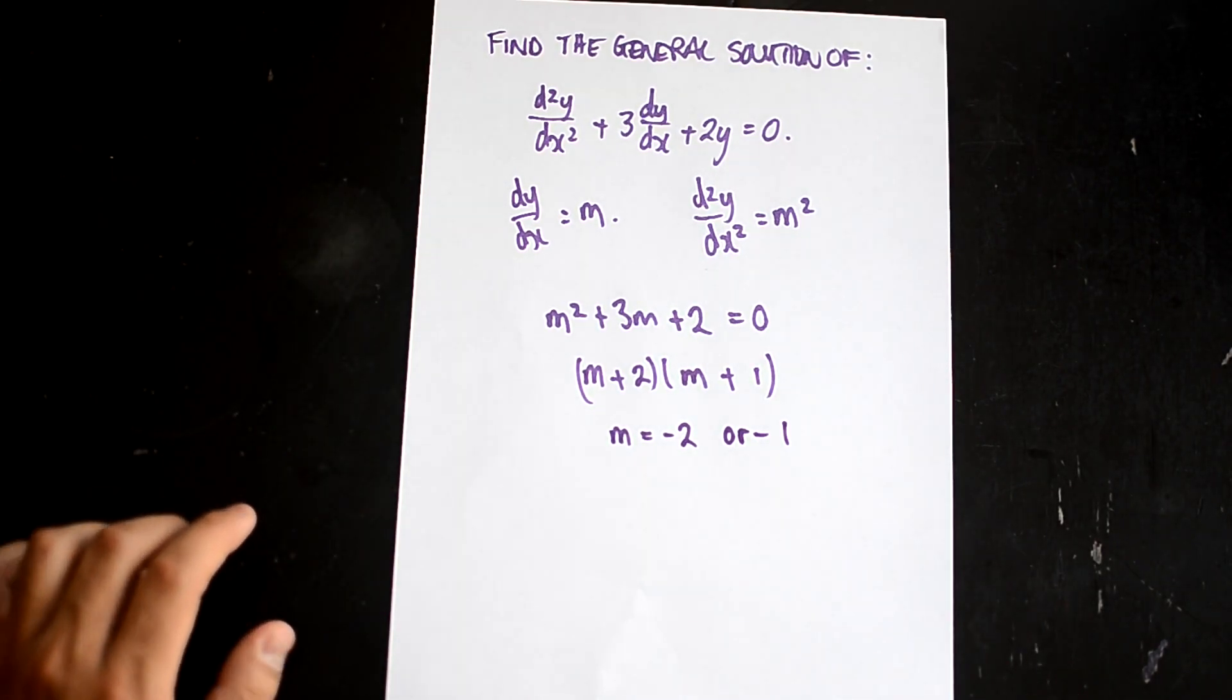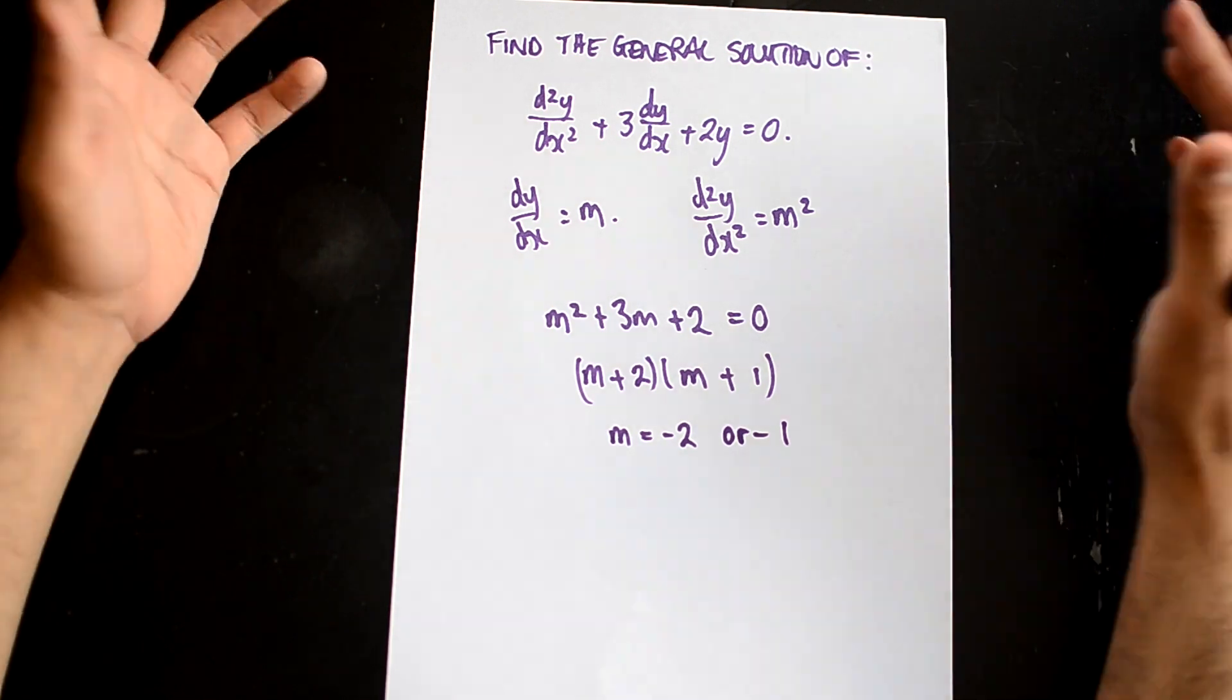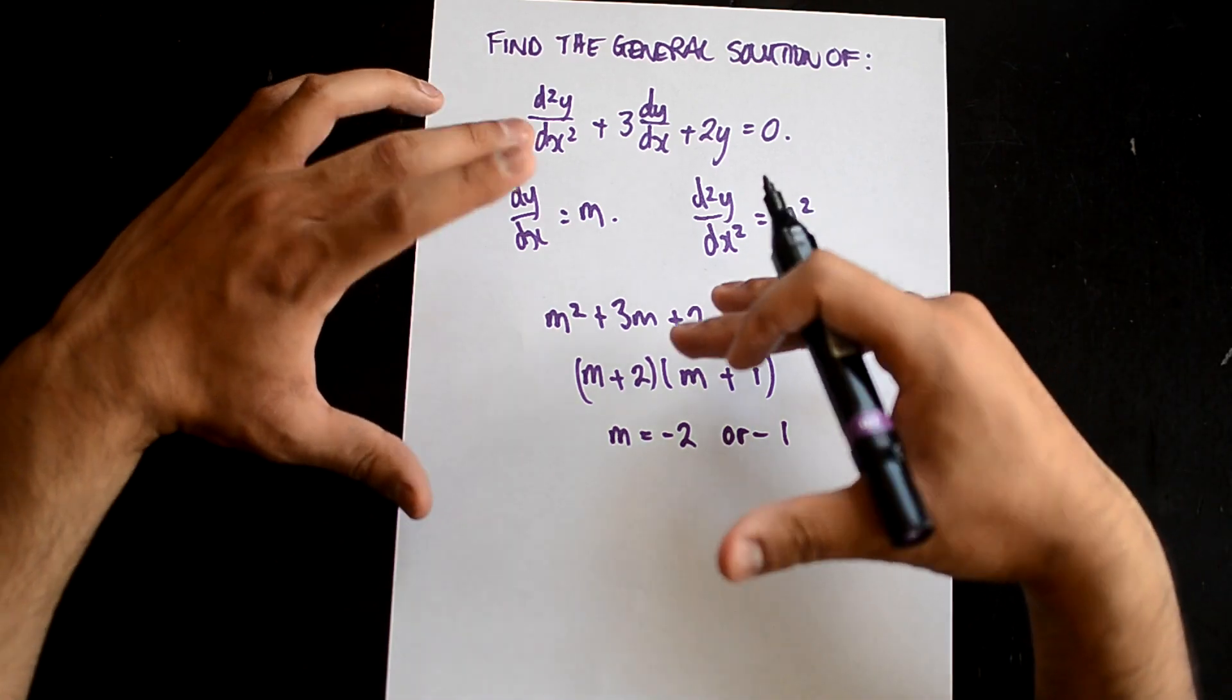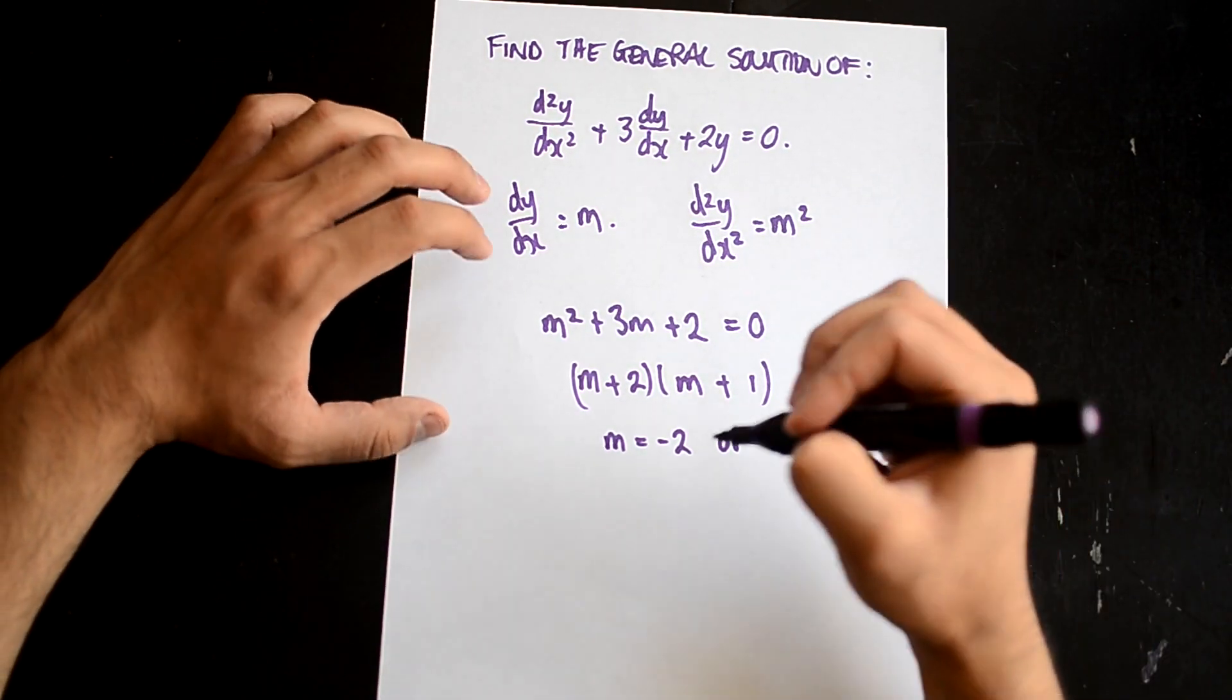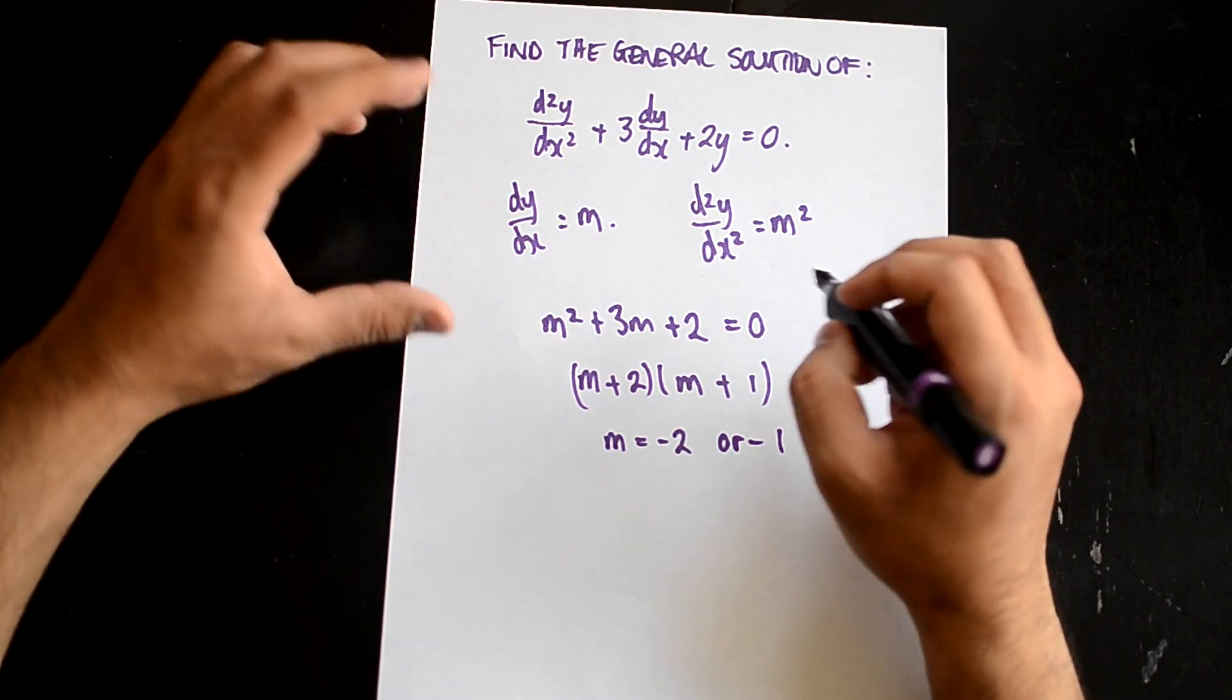From here, you should remember there are a load of general solutions, things which you should be able to look at and identify. In this problem, we can see that we have two values which aren't the same.